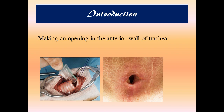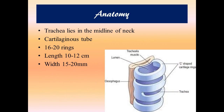Anatomy: the trachea lies in the midline of the neck. It is a cartilaginous tube consisting of 16 to 20 C-shaped cartilaginous rings. The length is about 10 to 12 centimeters and the width is 15 to 20 mm.